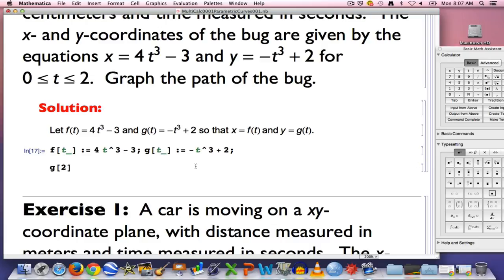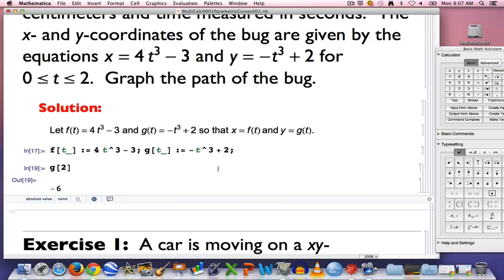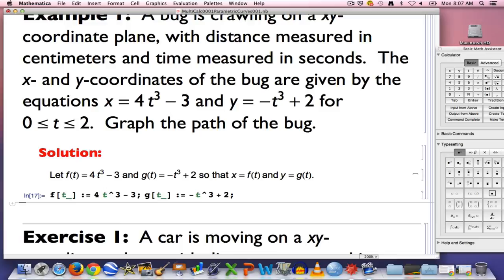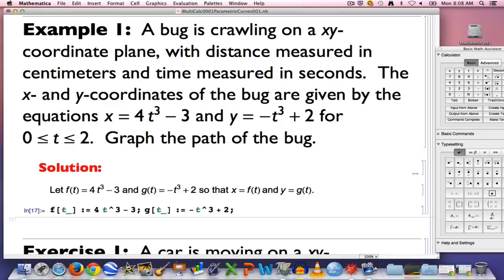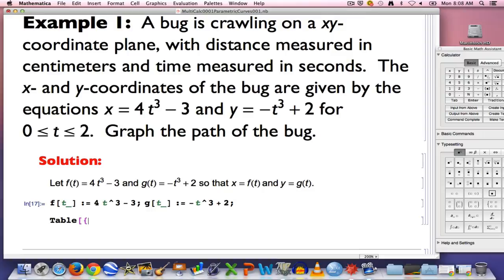The output of g when the input is 2 is -6. We will see this output here when we enter this function. Do a shift return, -6. That is the output of that function when t is 2. What's the first thing you should do to help you graph the parametric curve defined by these parametric equations? You should plug in points. In Mathematica, Table is a way that I can plot points.